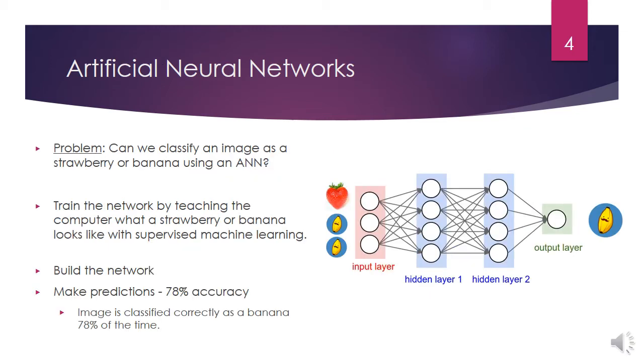Let's look at an example where we try to classify an image as a strawberry or banana. The first step is to train the network by labeling fruit images using supervised machine learning.